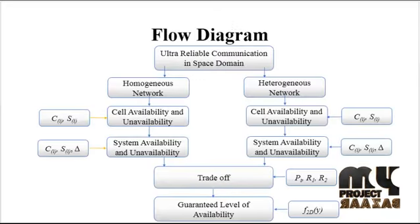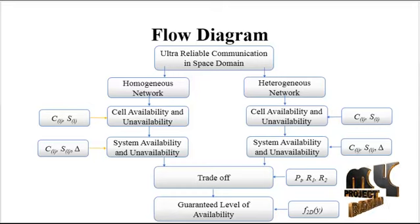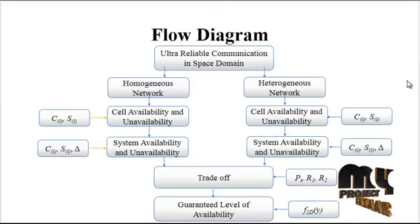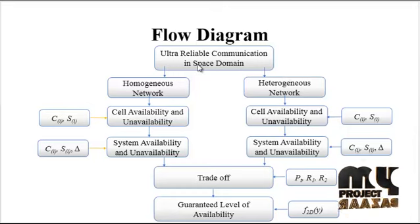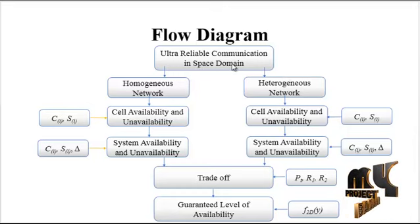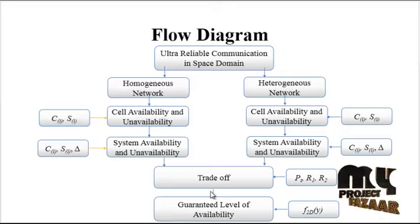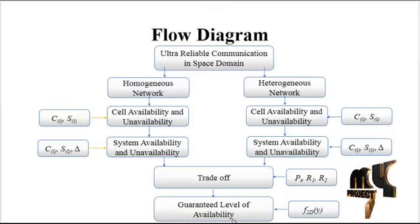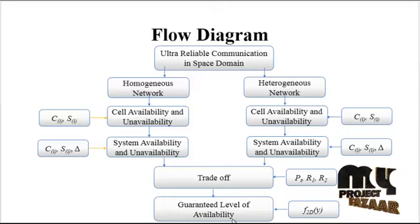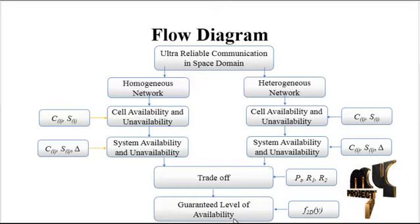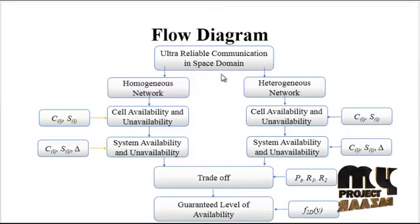Now we are going to discuss the flow diagram of the process. This is the overall working flow. The project consists of modules such as ultra-reliable communication in the space domain, which has the first stage of input, then the network is divided into two groups, then a trade-off stage, and finally the level of availability.